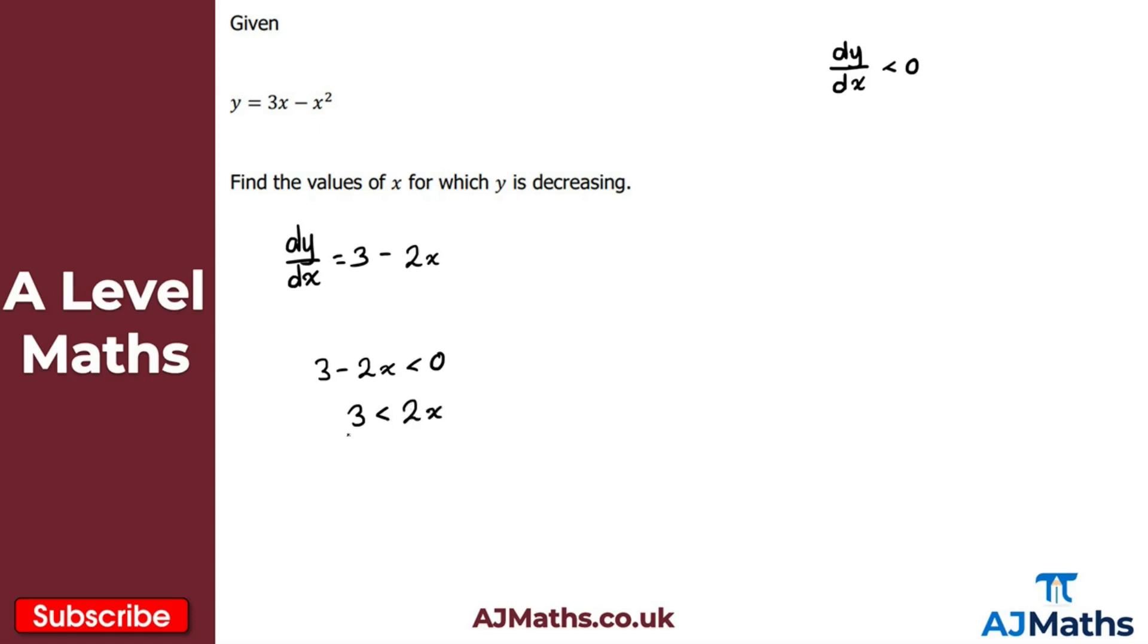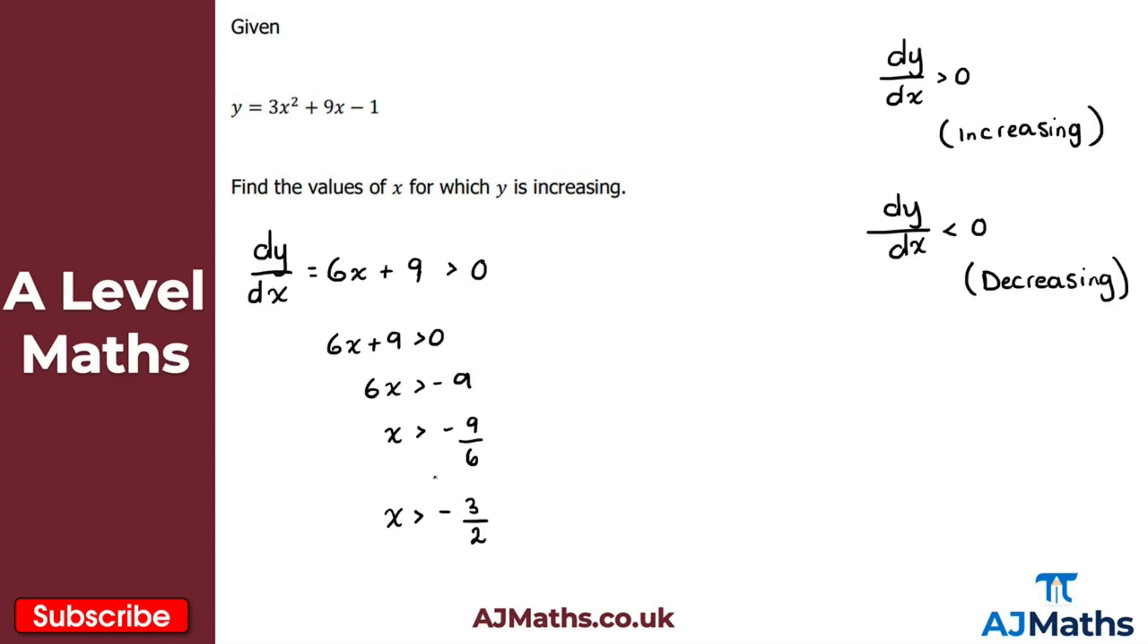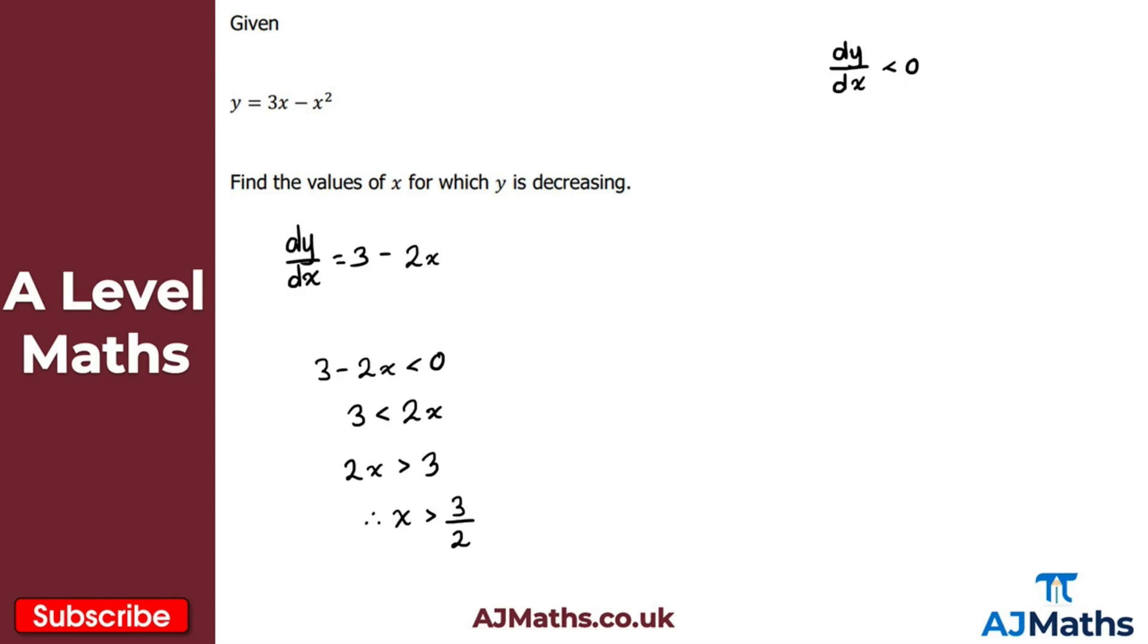Therefore 3 must be less than 2x. Or in other words, what we'd say here is 2x must be greater than 3. It might look a little bit more natural to us. And then I'm going to divide by the coefficient of x here. So therefore, the range of values of x for which y is decreasing will be x being greater than 3 over 2. And did we get the same for the last one? Minus 3 over 2, so pretty close. But there we go. So that's the values of x for which y is decreasing.